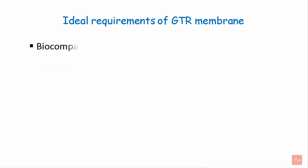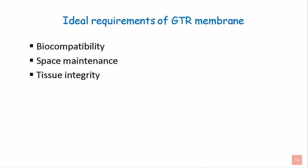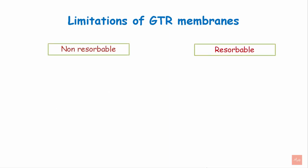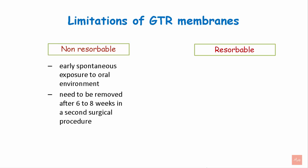The requirements of a guided tissue regeneration membrane are biocompatibility, space maintenance, tissue integrity, cell occlusiveness, rigidity, and degradability. Non-resorbable membranes can cause early exposure to the oral environment leading to infection, and they need to be removed after six to eight weeks in a second surgical procedure. Resorbable membranes, however, can undergo early degradation before the required time in the mouth and cause epithelial downgrowth.